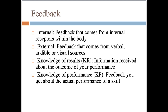We will finish this screencast by quickly discussing four types of feedback. Internal feedback comes from internal receptors within the body — for example, your muscles might tell you that a cartwheel you just performed was performed straight. External feedback comes from verbal, audible, or visual sources, incorporating all the sights and sounds of a performance or game. For example, a loud home crowd may tell you that your team is performing well, while a quiet home crowd may tell you that your team is performing poorly.